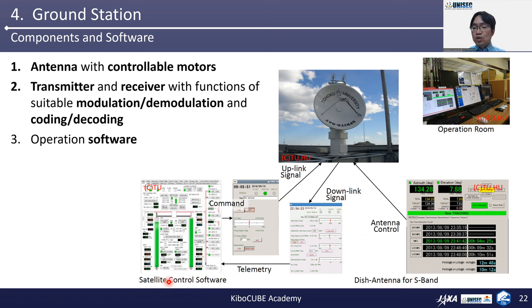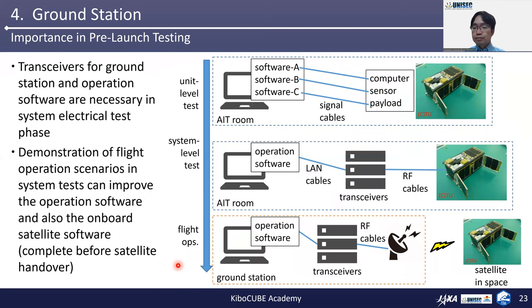Telemetry data is distributed from the receiver, but it is very raw data. We need to convert it to the satellite status or image data by individual conversion protocols. So this kind of satellite operation software will be prepared for each satellite. Transceivers for ground stations and operation software are necessary in the system electrical test phase — unit-level test, system-level test, and flight operations. Demonstration of flight operation scenarios in system tests can improve the operation software and also onboard satellite software.